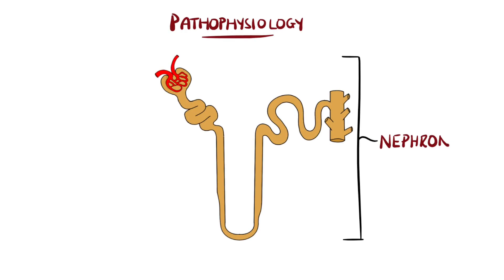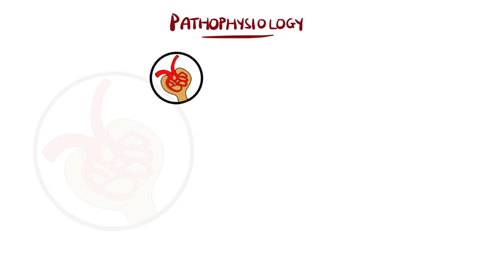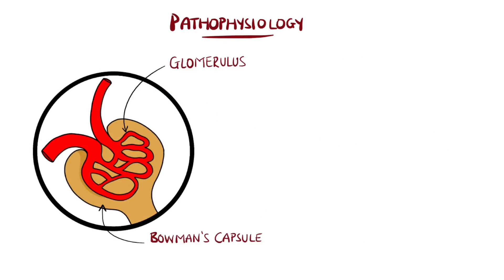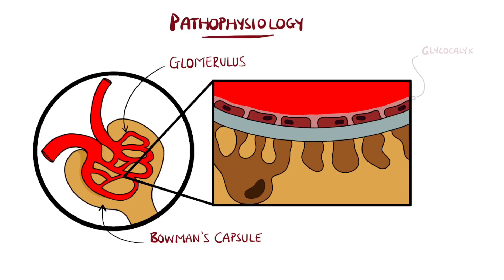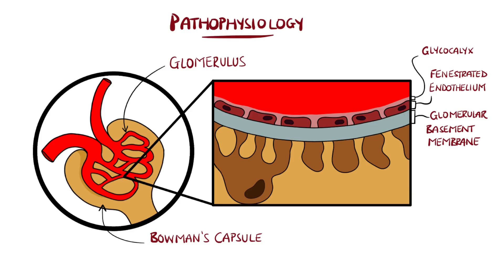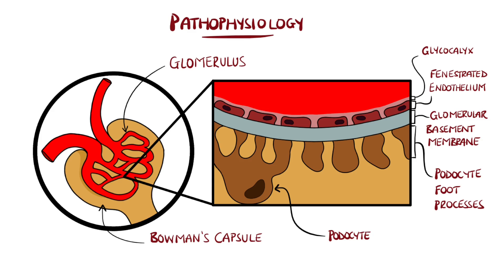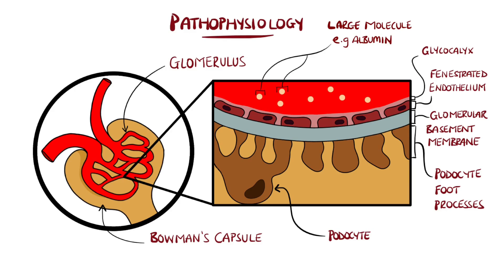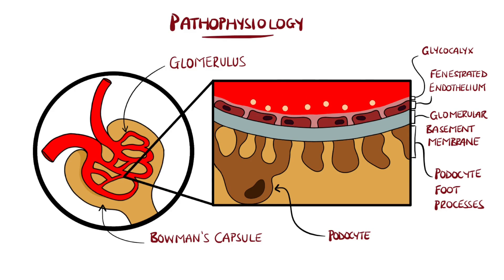The functional unit of the kidney is the nephron, and normally in the glomerulus of the nephron, there is a specialised membrane that forms the filter, made up of a fenestrated endothelium, glomerular basement membrane, and the foot processes of podocytes, which are cells that wrap around the capillary, giving this additional filtration layer. Altogether, these structures normally act as a filter and prevent large molecules from passing through into the Bowman's capsule and renal tubules.